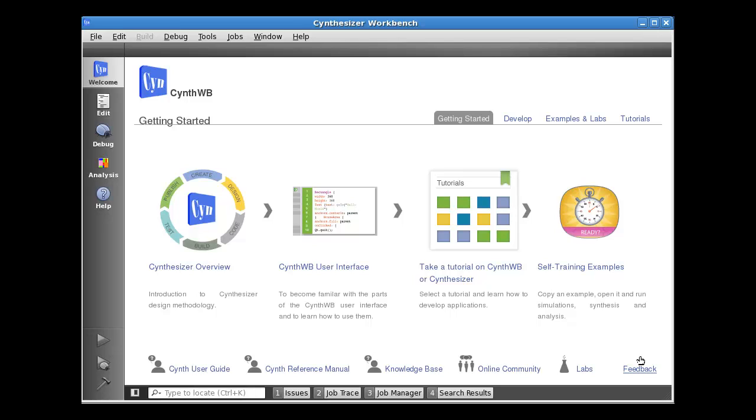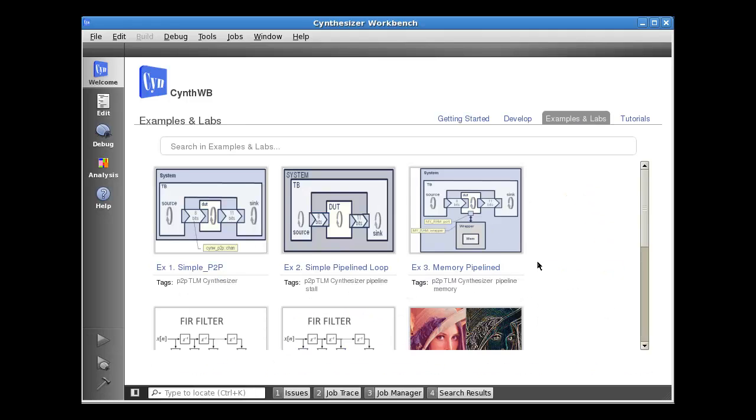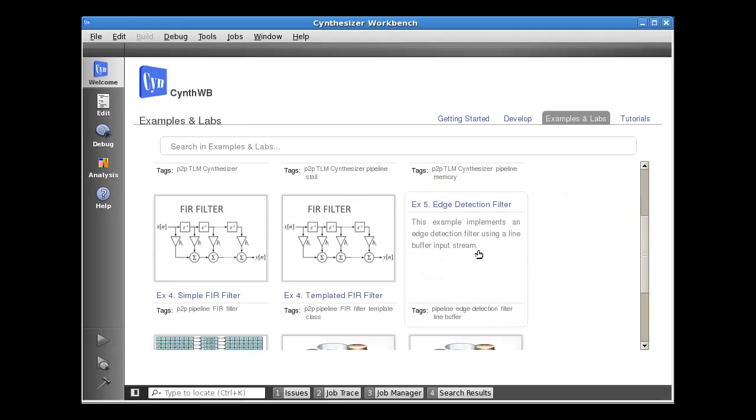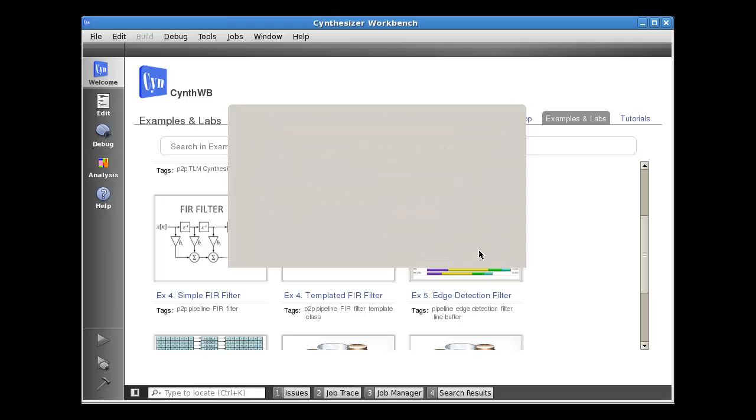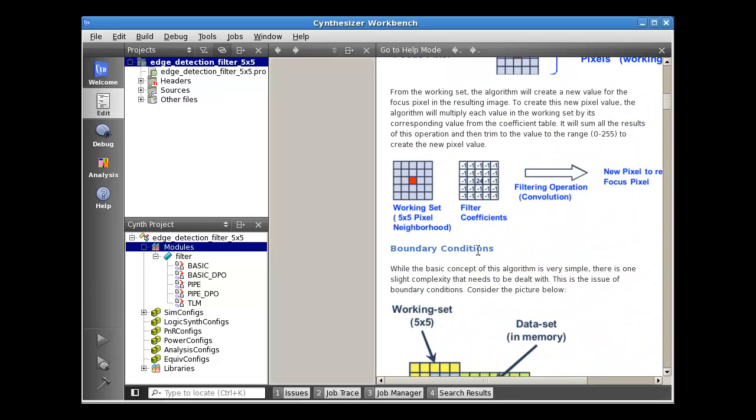No discussion of this example would be complete without looking at some actual source code. To do that, we're going to launch Synthesizer Workbench and download this example, which is actually included as part of the software distribution. We would go to the examples and labs page, scroll down to the edge detection filter, select it, copy it to our local space, and immediately begin editing. Now here, this will also walk you through a detailed description of the project when you download it.